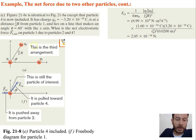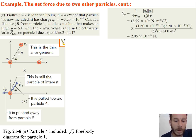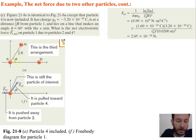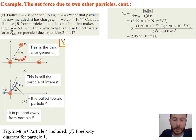Moving on to the next example, a fourth particle is introduced — we remove Q3 and add Q4. Unlike the others, Q4 is not on the x-axis; it's up in the first quadrant. The charge Q4 is negative 3.2 times 10 to the negative 19 coulombs, so there will be an attractive force between Q4 and Q1. It's at a distance of three-fourths r from particle 1, along a line that makes an angle of 60 degrees with the x-axis. We need the net electrostatic force on particle 1 due to particles 2 and 4.